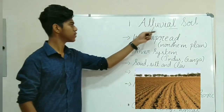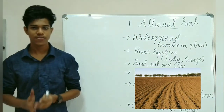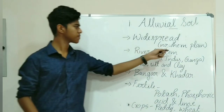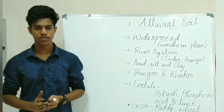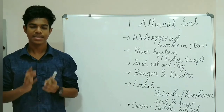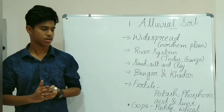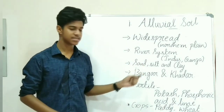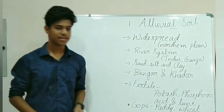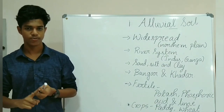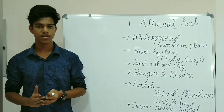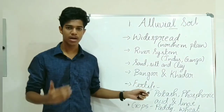The first soil is alluvial soil. Alluvial soil is the most widespread soil in our country and the entire northern plains are made up of alluvial soil. It is deposited by three main river systems: the Indus, Ganga, and Brahmaputra. It is found in the form of sand, silt, and clay. Alluvial soil is mainly found in two age forms: Bhangar and Khadar.